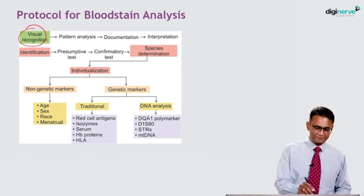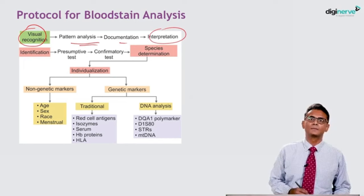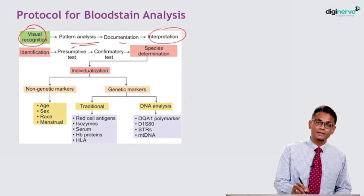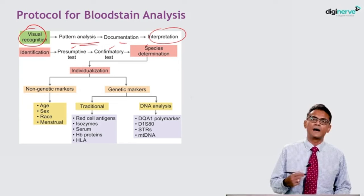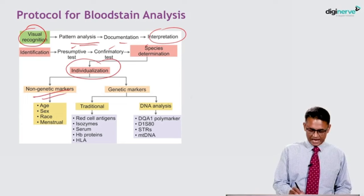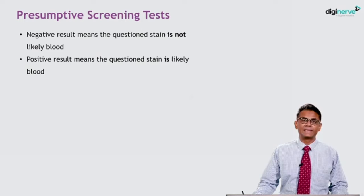This is the protocol for examination of a blood stain. First is visual recognition, then pattern analysis — documentation and interpretation of this pattern. Then identification of the blood: there is a presumptive test followed by a confirmatory test. This is followed by species determination. After this comes individualization, which is based on non-genetic markers and genetic markers. The genetic markers can be traditional or DNA analysis.